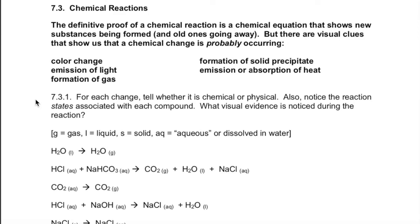You can write a chemical equation for a physical change, but when you read that equation and look at that reaction, you'll be able to see that it's not actually a chemical change. When writing chemical equations, we usually write a little subscript in parentheses showing the state of the compound: G for gas, L for liquid, S for solid, or AQ meaning a solution of something dissolved in water, which is a common way for reactions to take place.